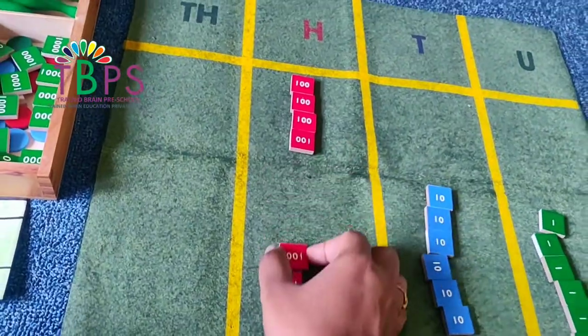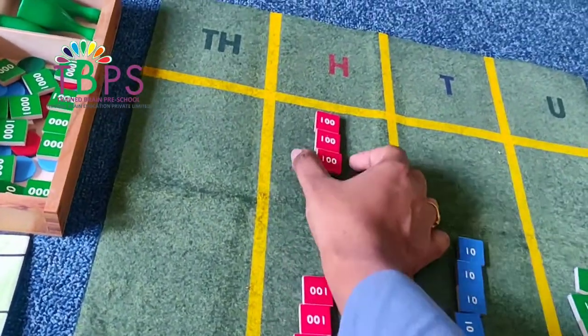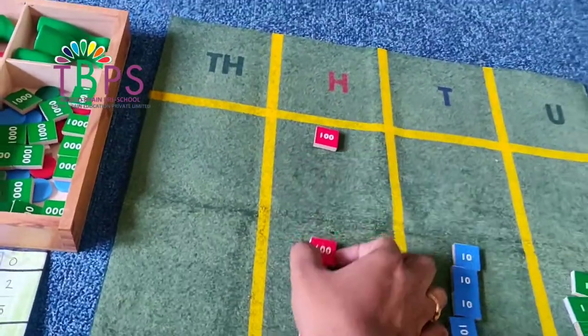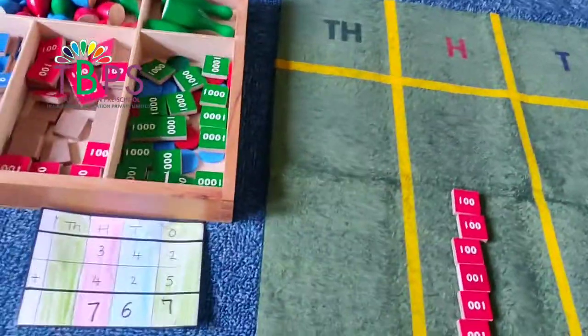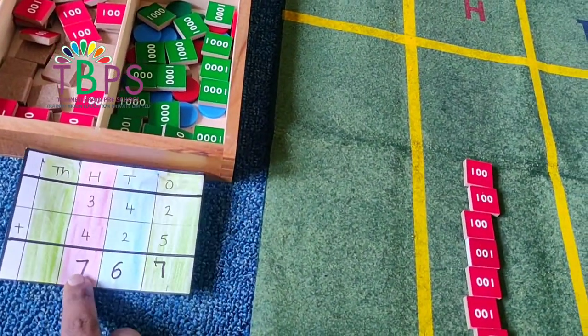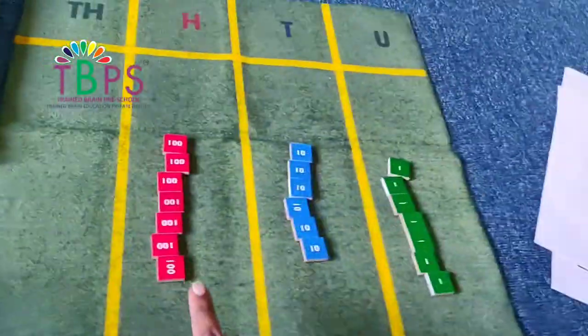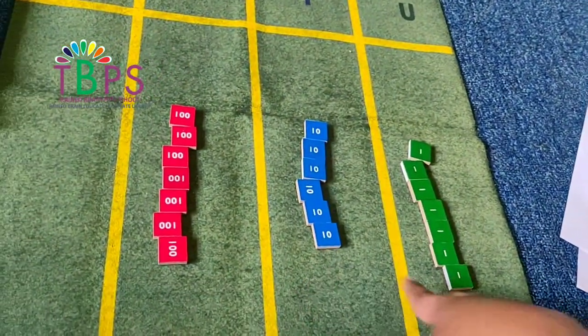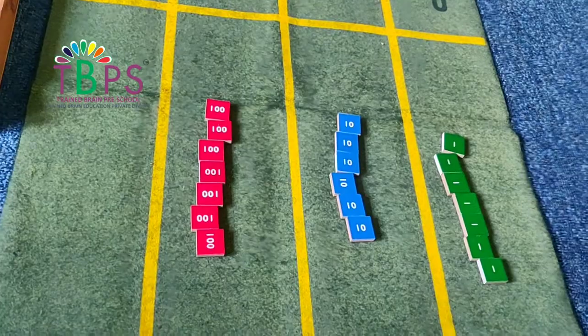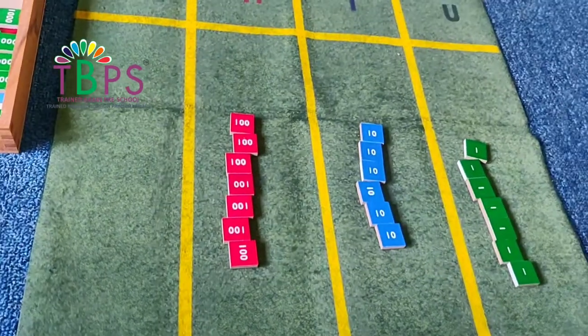Now let's join the hundreds: 100, 200, 300, 400, 500, 600, 700. So 767 is our answer. So this is our static addition.